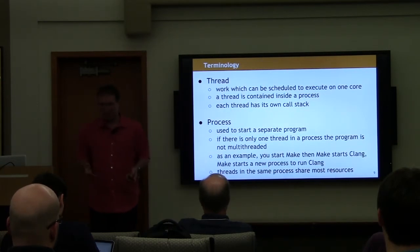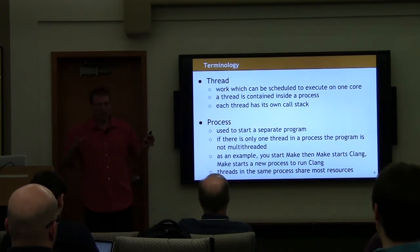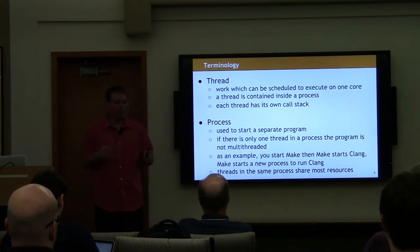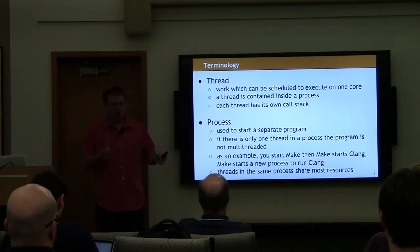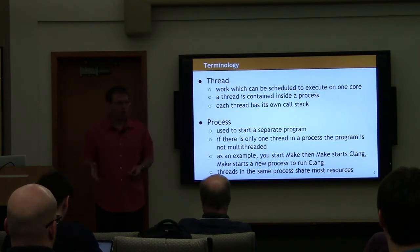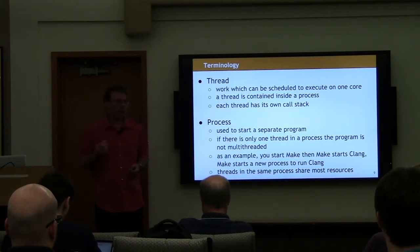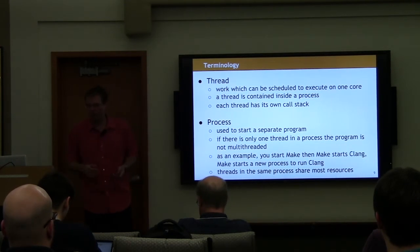A thread is a collection of work — a statement of a bunch of instructions to be performed on one core. A thread is part of a process. Each thread has its own call stack, and that's the defining characteristic of a thread: it has a separate call stack from every other thread in your process. The process is the whole program as a unit.